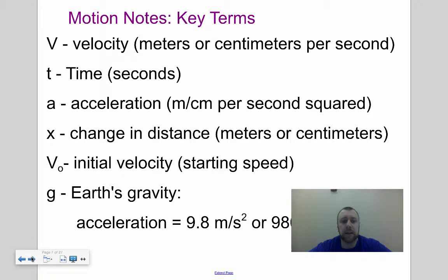X or delta X, the change in X, is the change in distance. So meters or centimeters, how much things move. V with a little zero underneath is called the initial velocity. It's also called V naught, and it's our starting speed.